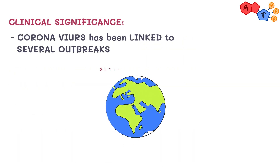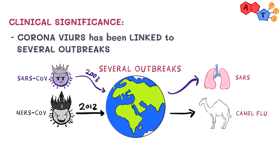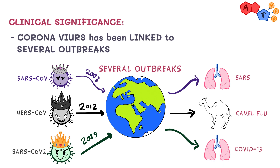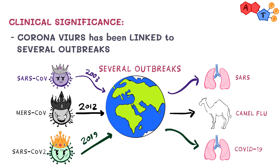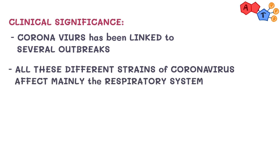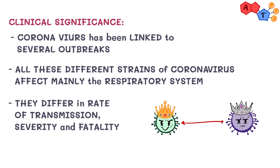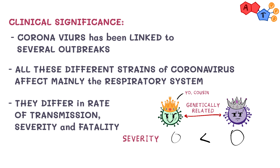Coronavirus has been linked to several outbreaks. In 2003, we had SARS, caused by SARS-CoV. In 2012, we had MERS, also known as camel flu, caused by MERS-CoV. Right now, COVID-19 is caused by SARS-CoV-2. Its name is close to the original SARS virus because SARS-CoV-2 is genetically related to SARS-CoV. All these strains mainly affect the respiratory system, but differ in rate of transmission, severity, and fatality. For example, SARS-CoV was more deadly but less infectious than SARS-CoV-2.